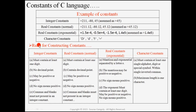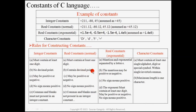Now the rules for constructing constants. For integer constants: must contain at least one digit, no decimal point, may be positive or negative, and no sign means positive. Commas and blanks must not be present — you cannot write '4 5' with a space; you have to write 45 continuously. For real constants in normal case, the rules are more or less the same: must contain at least one digit and a decimal point, may be positive or negative, and commas or blanks must not be present.